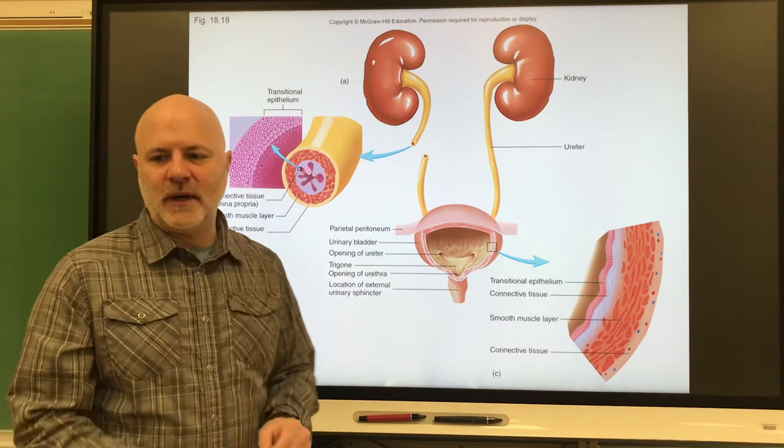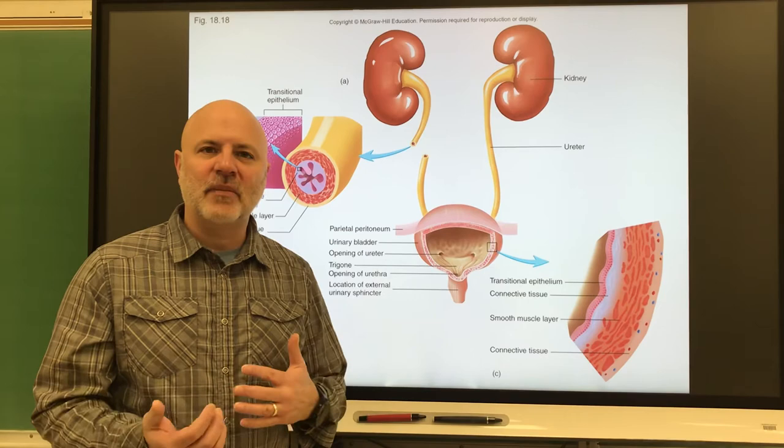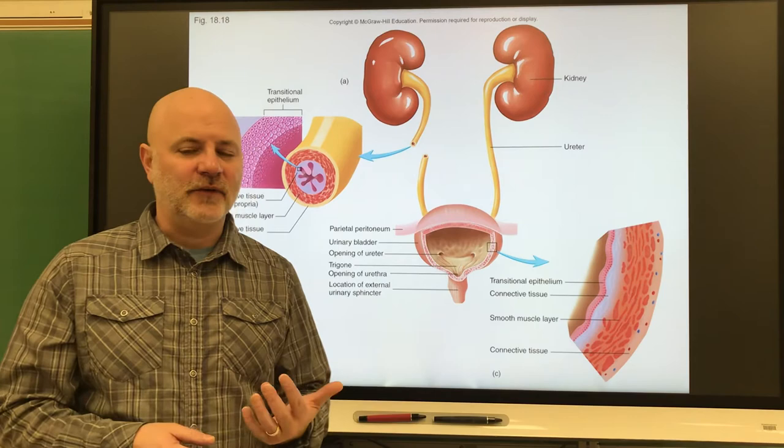So the last part here is urethra, and the urethra is a tubular organ that transports urine from the urinary bladder to outside the body. Now in males, it serves a second function. It also transports sperm and reproductive fluids.